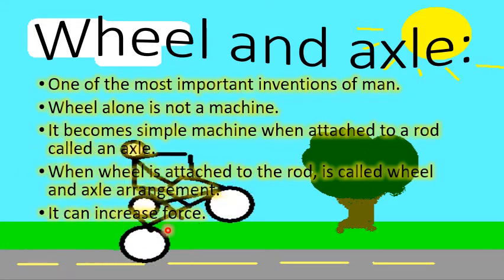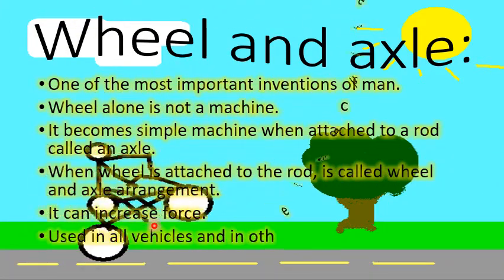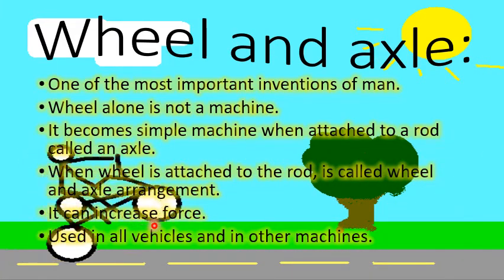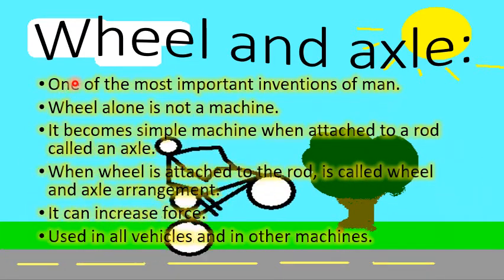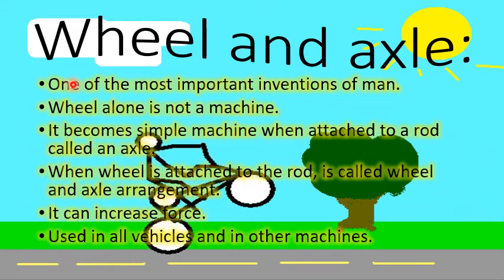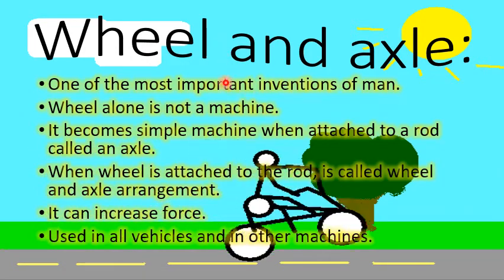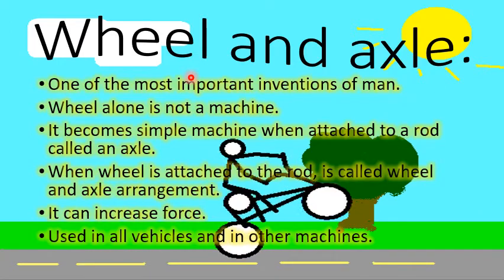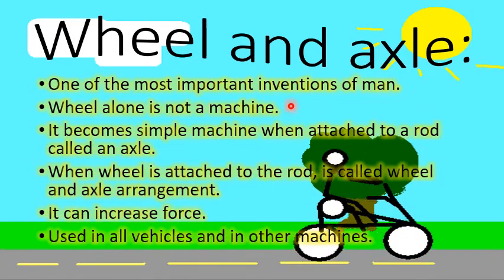The wheel and axle can increase the force, and it is used in all vehicles and in other machines as well. The wheel is one of the most important inventions of mankind — in fact, it is the oldest machine invented by human beings.